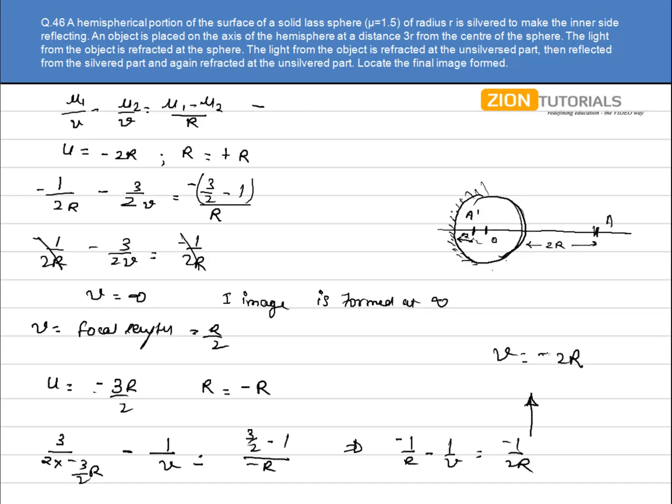-2r means the image is formed on this very side, and minus sign shows that image is formed on the left-hand side of the mirror, and it is at a distance of 2r. So the final image will be formed at the pole. This is my final image.